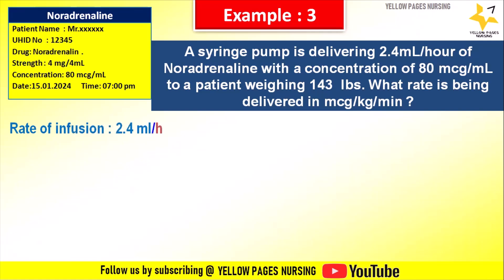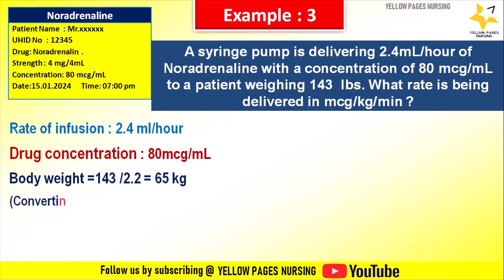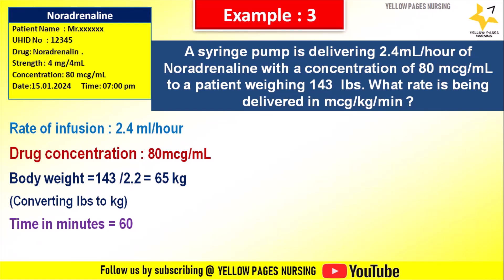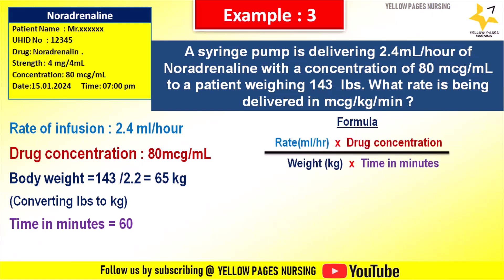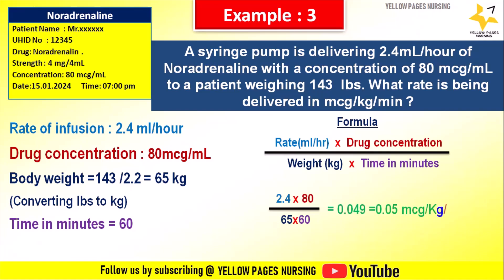Rate of infusion is 2.4 ml per hour, drug concentration is 80 mcg per ml. Body weight: 143 ÷ 2.2 = 65 kg. Time is 60 minutes. Formula: 2.4 × 80 ÷ 65 ÷ 60, which gives 0.049, approximately equal to 0.05 mcg per kg per minute.